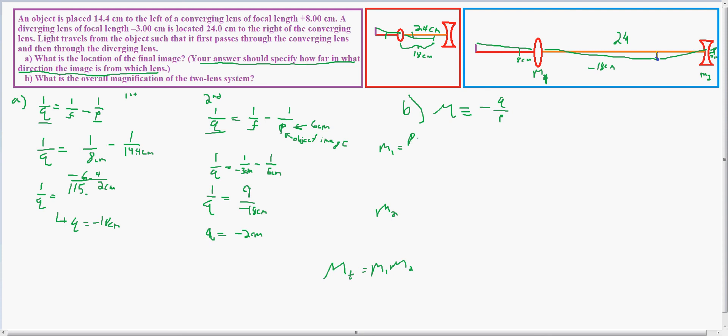So what I have is Q equals negative 18 centimeters divided by P, which equals 14.4 centimeters. And actually I have two negatives here, so they cancel out, and that will give me 1.25, a magnification of 1.25.